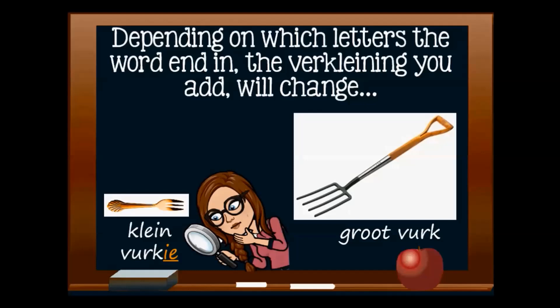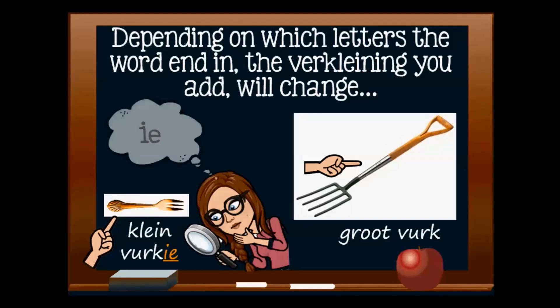Here we have a groot vurk, like the one you would use in the garden. But I certainly would not use a garden fork to eat cake. For cake I would use a vurkie. And if I look carefully at the word vurkie, the part that makes it a verklein woord is the 'ie' sound at the end of the word.